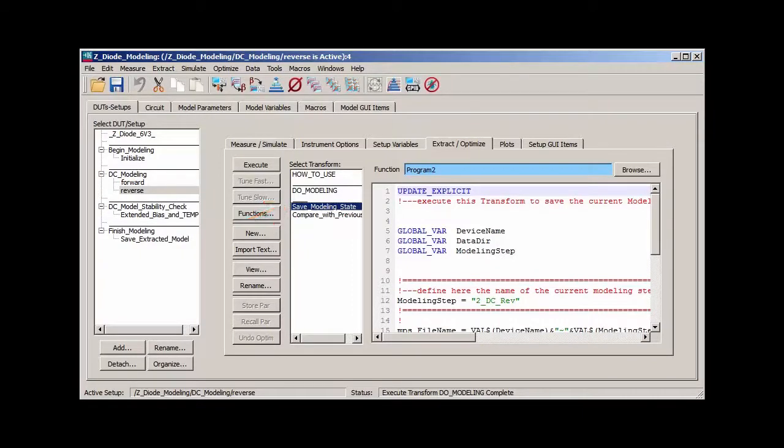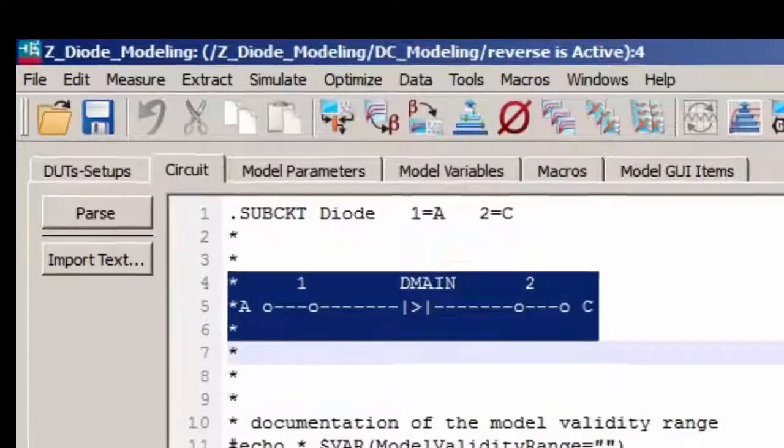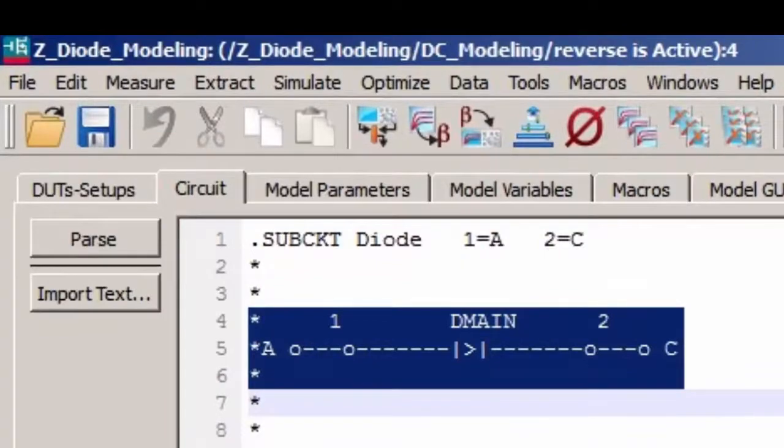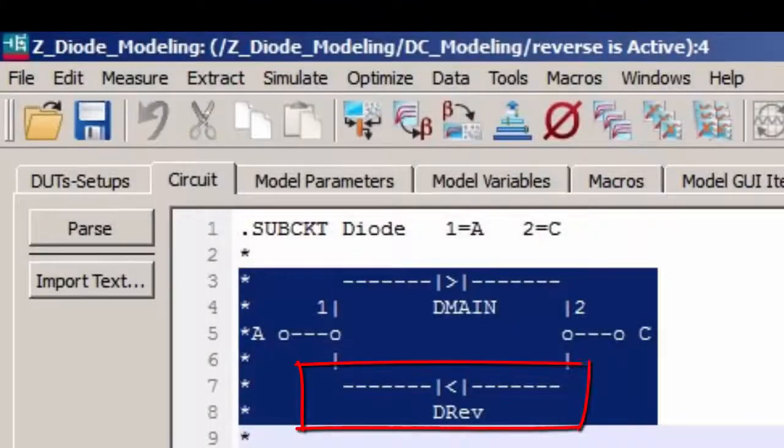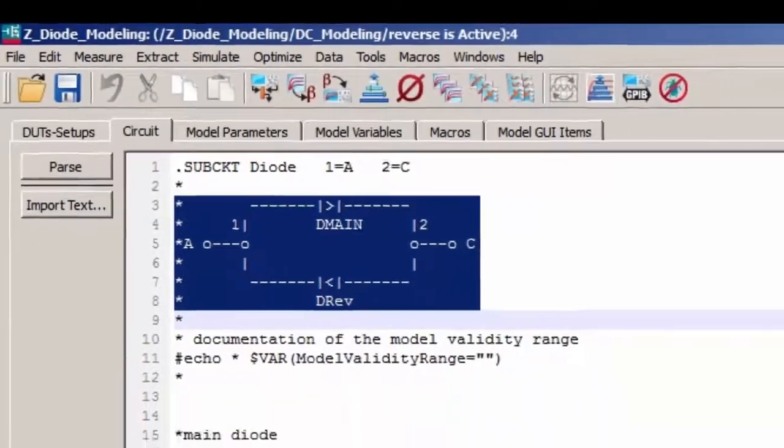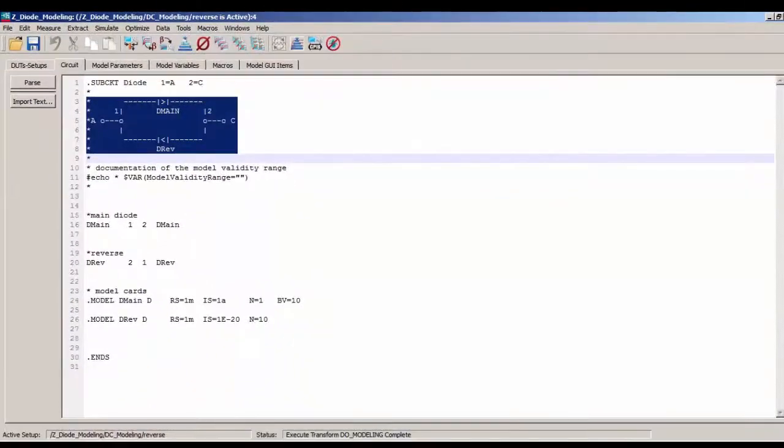Let me now show you how we can improve the model netlist and still leverage the same modeling UI and even switch between the two netlist versions. Going to the circuit tab, we see the SPICE netlist. And I enhance the simple diode model used so far with a sub-circuit featuring a second diode connected in parallel but reversed to the primary diode D-main.